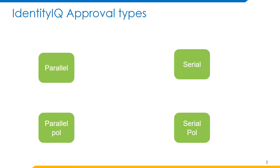Serial approvals: approvals are processed one at a time and there must be consensus — the first approver that rejects terminates the entire approval flow. Serial Poll: approvals are processed in order but consensus is not required; all approvals will be processed and we don't stop for rejections — in effect, we are taking a poll of the approvers. Any: approvals are processed concurrently and the first approver to respond makes the decision for the group. If the approval type is set to None in LCM provisioning, there is no approval for that particular provisioning process.